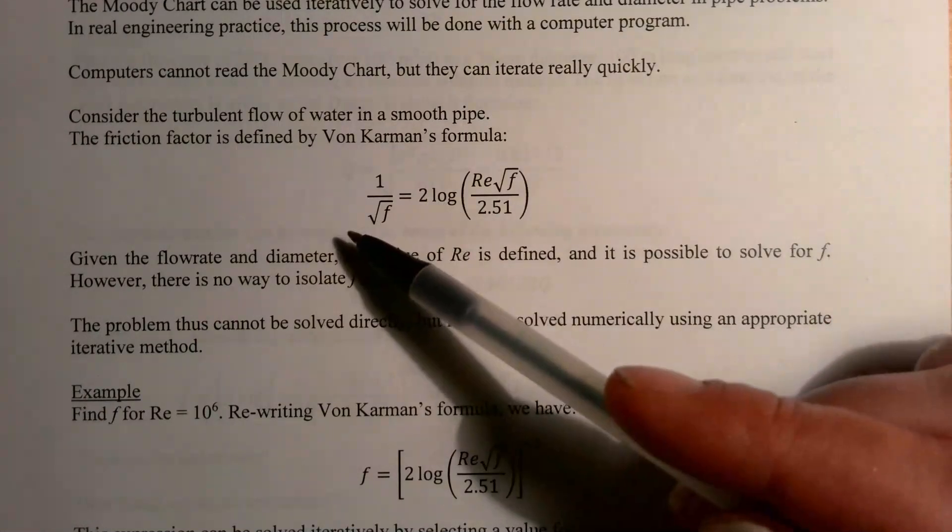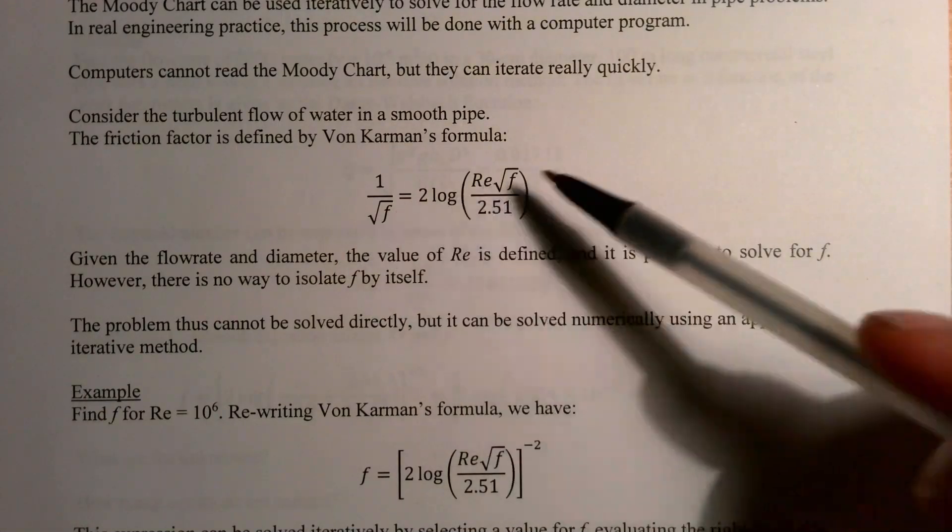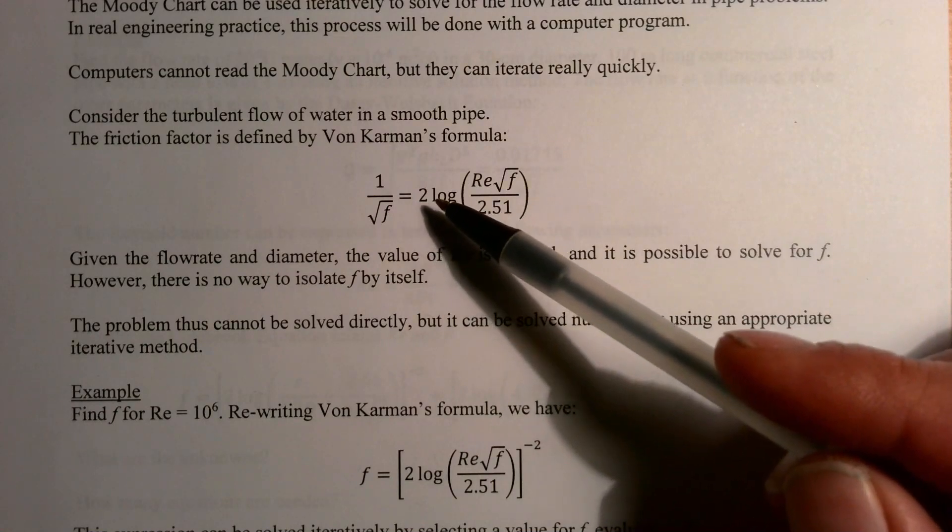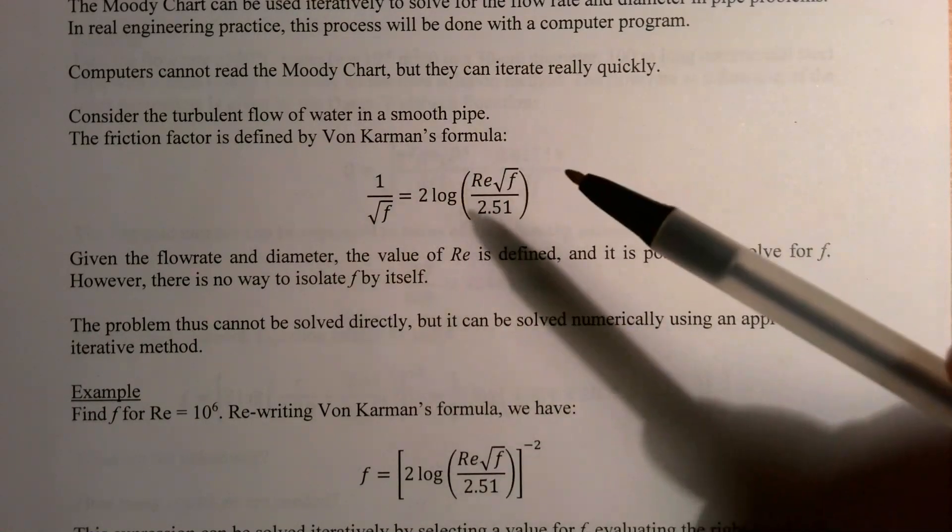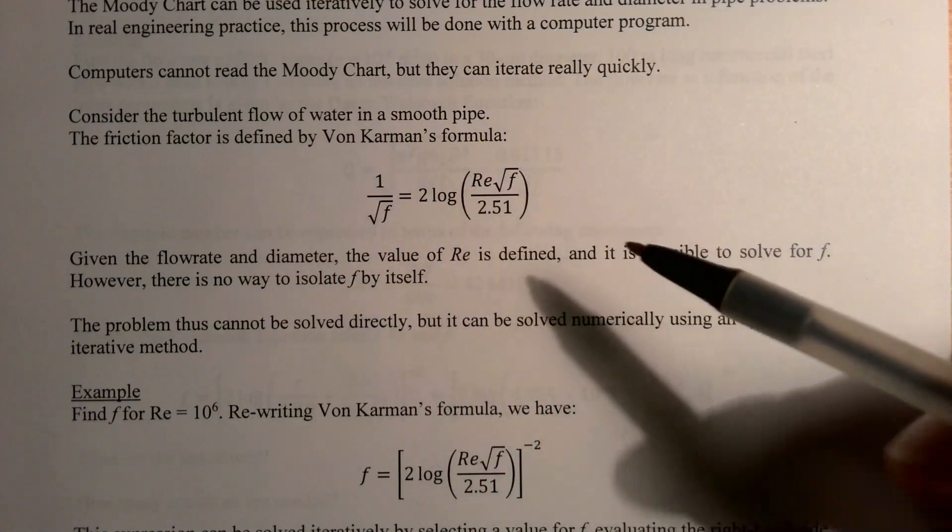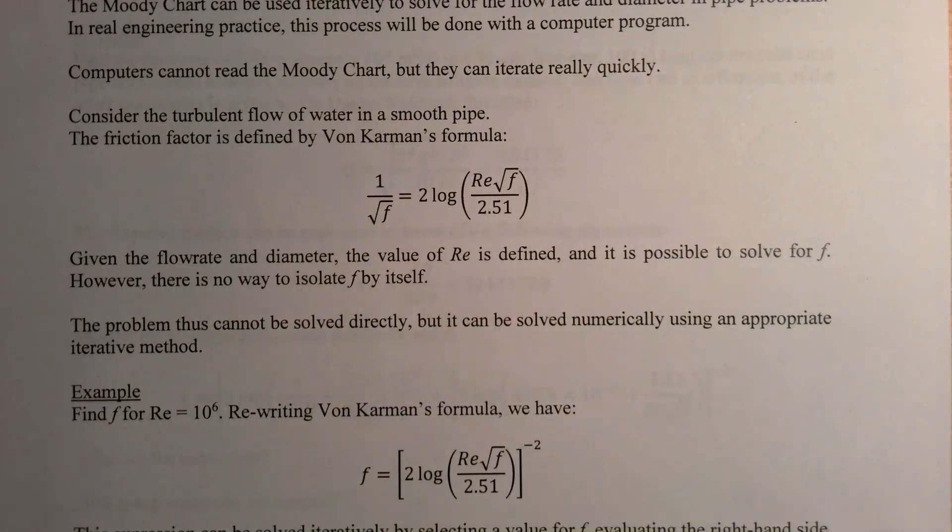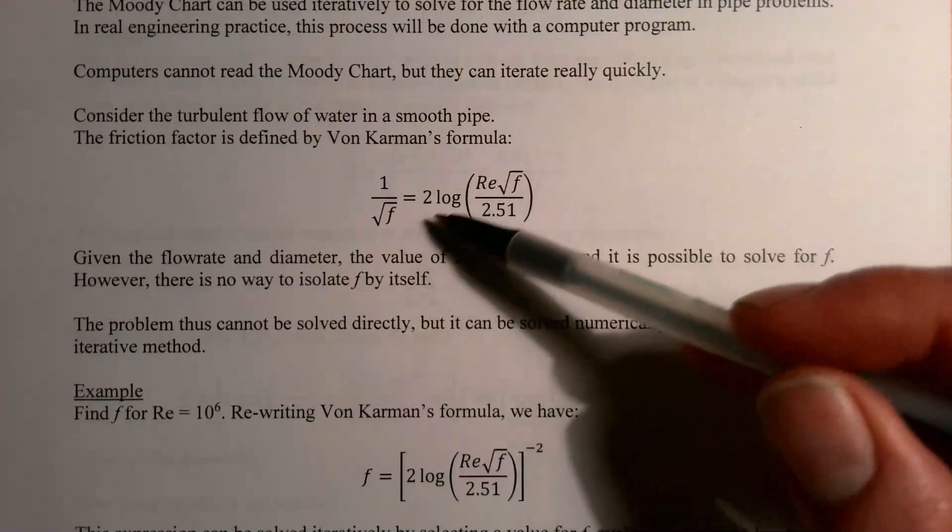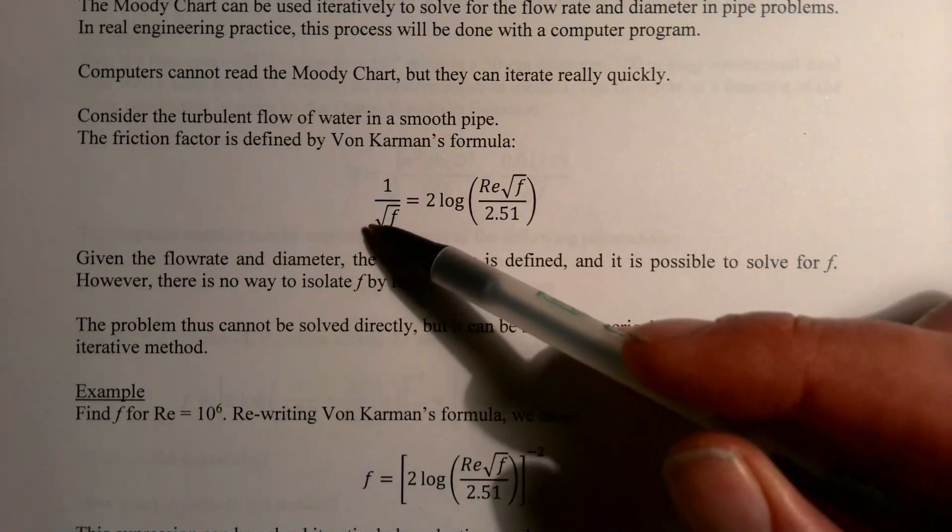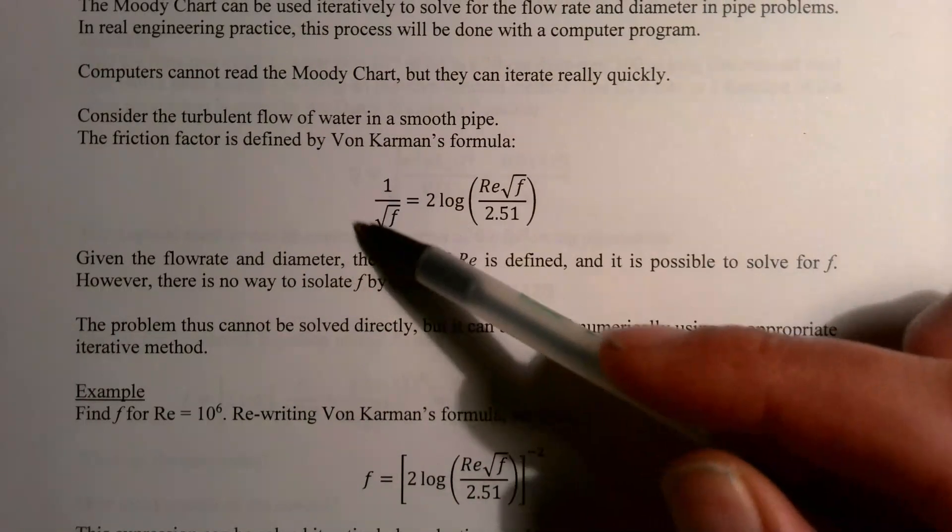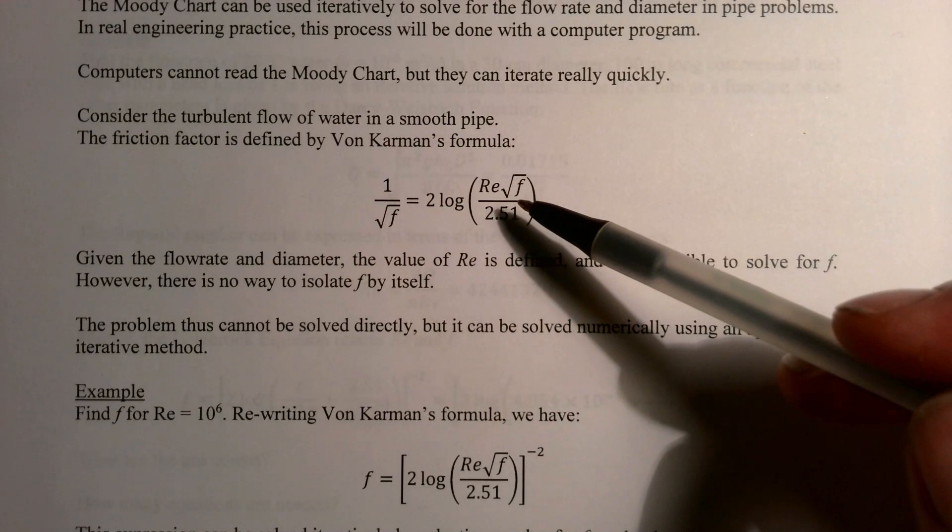Looking at this formula, there's an f here on the left side, and then there's an f also over here on the right side inside of this logarithm. Having f on both sides of the equation here, with one of them being inside the log, makes it so that there's no way that you can get f completely isolated by itself.